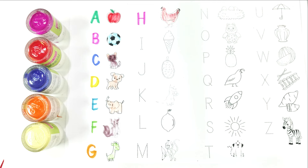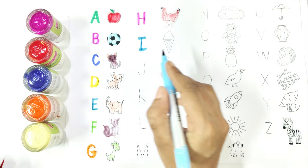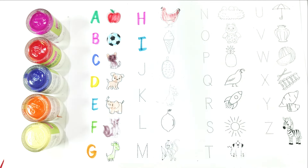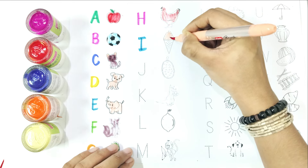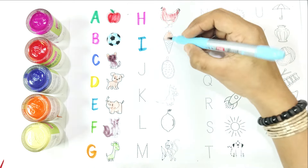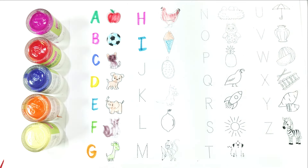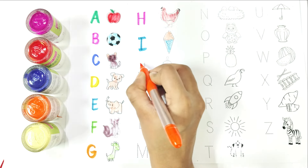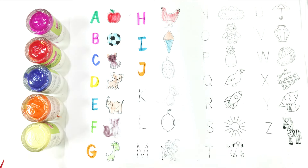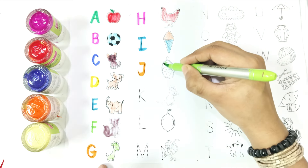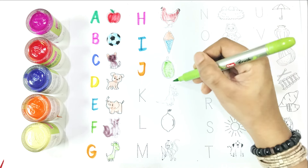Write with me. I — I is for ice cream. Again, say with me: I is for ice cream. Write with me. J — J is for jackfruit. Again, say with me: J is for jackfruit.